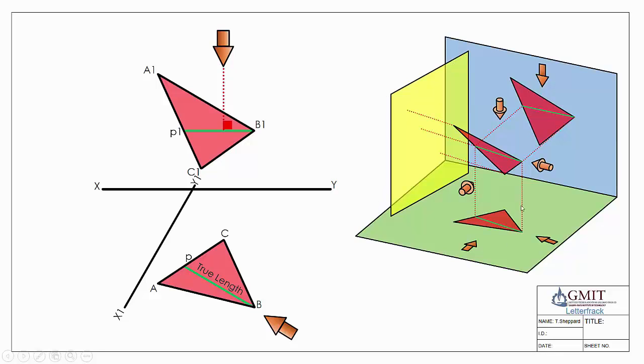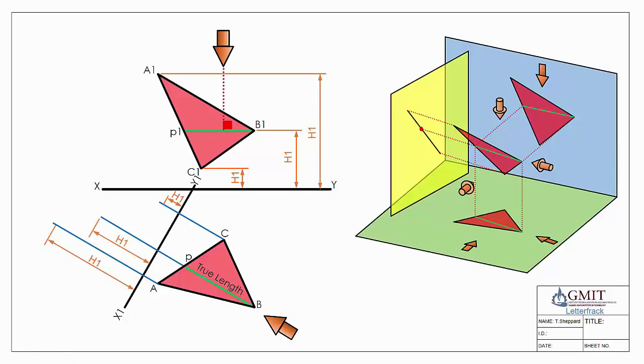We project our plane onto it. There's our point view of our true length line, the line that we just found. We project each of our points like so. I take my heights from my front elevation and I mark them off. And we can see we have the point view of our true length line and we have an edge view of the surface.